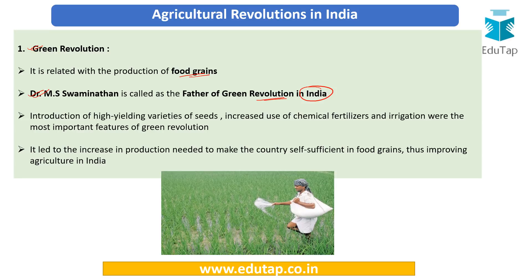The typical features of the green revolution were the introduction of HYV seeds and increased use of chemical fertilizers and irrigation. Basically it was a crop augmentation program launched in the states of Punjab, Haryana, and UP, and when productivity increased greatly, it was called the green revolution. This revolution led to increased production of food grains — particularly wheat and rice — making the country self-sufficient, because in the 1960s and 70s India had to import these important food grains.